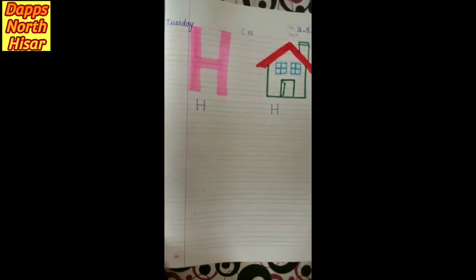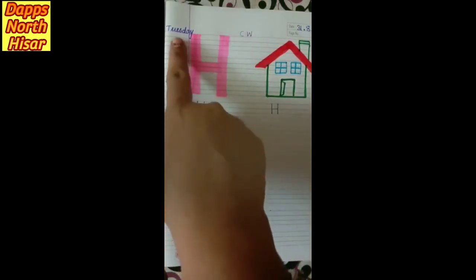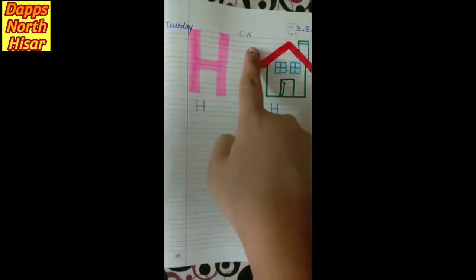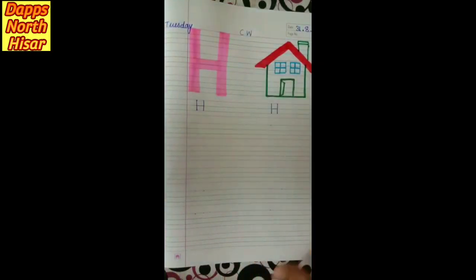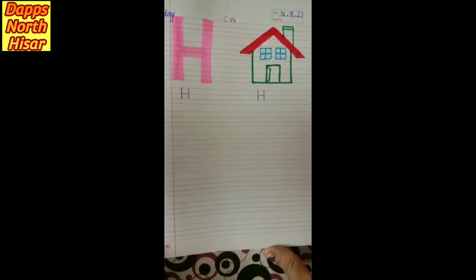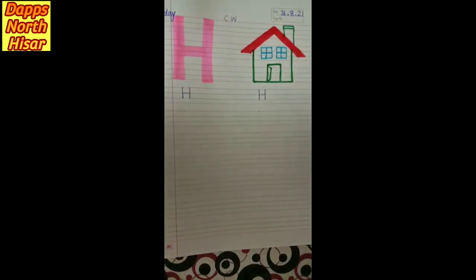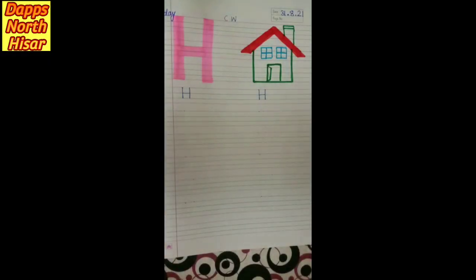Pahle hama date odde karay. Today is Tuesday, and this is your class work and the date is 31st of August 2021. Aur 31st is month ka last date hai. Aur kal se humari new month start hogi.